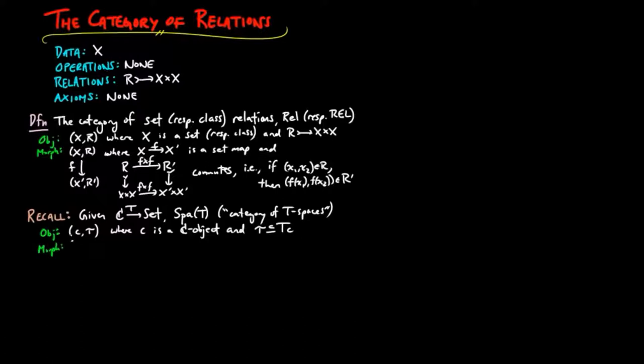Morphisms F from (C, tau) to (C', tau') are C morphisms which respect the T structure, or in other words, the following diagram commutes.